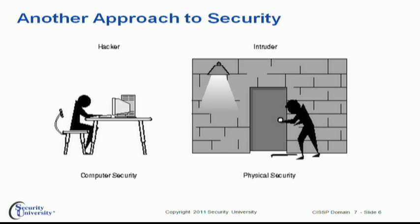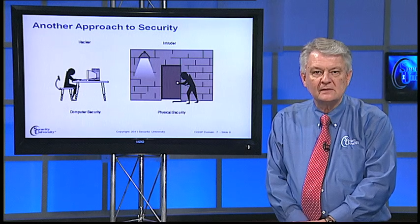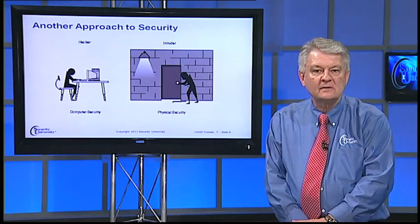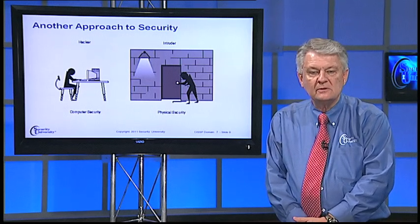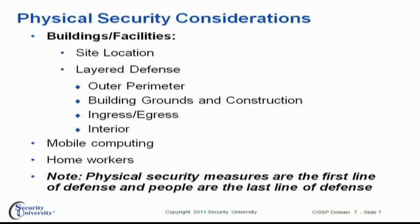A lot of what we've talked about in the course up to this point has related to the logical security side of things, and we're concerned about hackers and other abusers of our environment. But in this chapter, we're going to talk about somebody who's trying to penetrate your physical perimeter — the buildings and facilities where we contain our computer equipment, all our offices and business operations, and the perimeter around them.